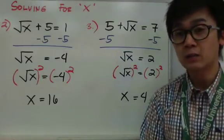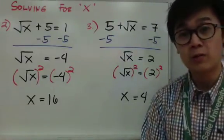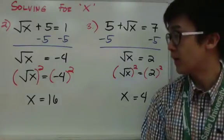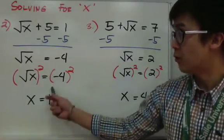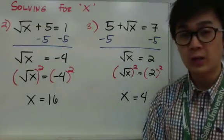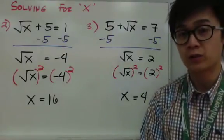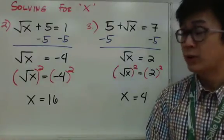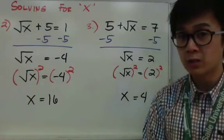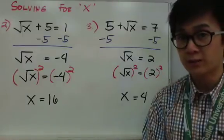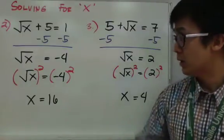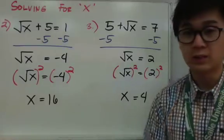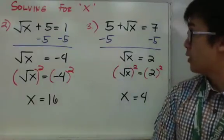To get rid of the radical with your x, you need to square both sides. You are left with x by itself, which is equal to negative 4 squared. We know that negative 4 times negative 4 is 16, so x is equal to 16. Always remember: whenever you square a number, it will always give you a positive answer. That's why even if you have negative 4, when you square this number, it gives you positive 16.